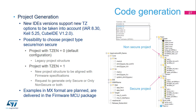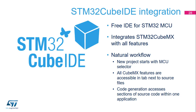When TrustZone is enabled (TZEN=1), the generated project structure is made of two sets: a secure and a non-secure project. Both projects can be downloaded in flash memory for execution. The secure project provides the APIs of non-secure callable entries to the non-secure project. While it is still possible to use STM32CubeIDE normally and generate code for all supported development environments, the new STM32CubeIDE includes an embedded version of CubeMX that is easy to use and full-featured.